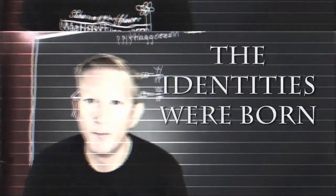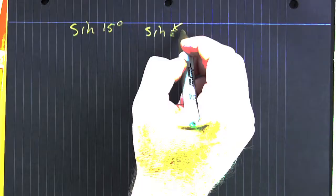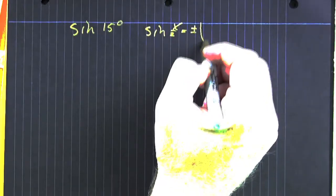And this is where the identities were born. Sine of 15 degrees. What are we going to use?